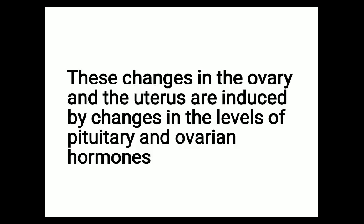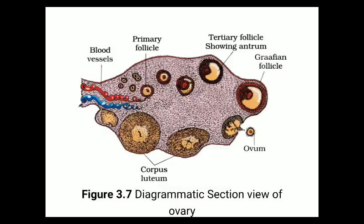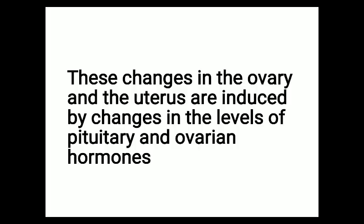These changes in the ovary and the uterus are induced by changes in the levels of pituitary and ovarian hormones. Two types of hormones play a very important role: the pituitary hormone secreted by the pituitary gland, and the ovarian hormone secreted by the ovary of the female.